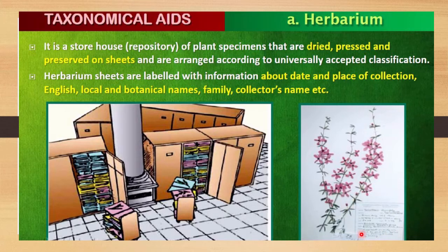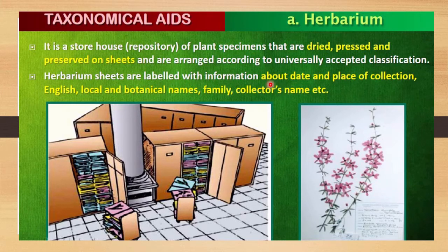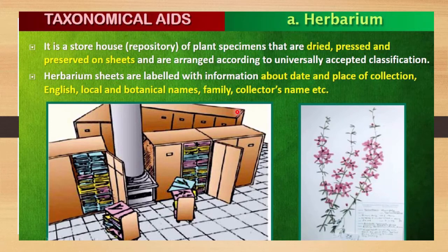Herbarium sheets are labeled with information — this may be asked in board exams. The information on a herbarium sheet includes: the date and place of collection, English name, botanical name (which is the scientific name), local name, family, and the collector's name.